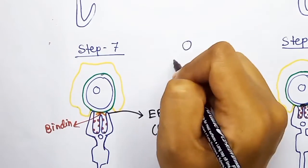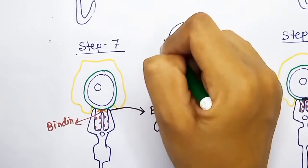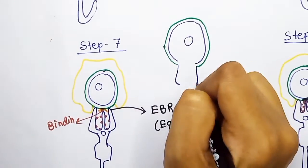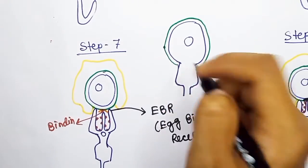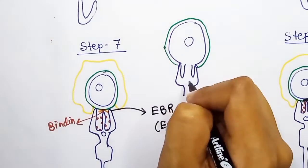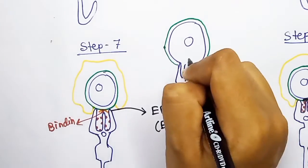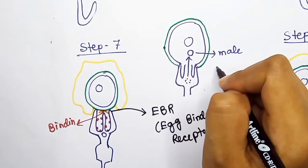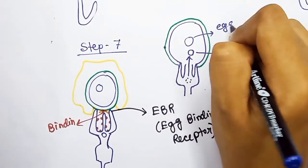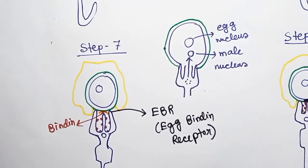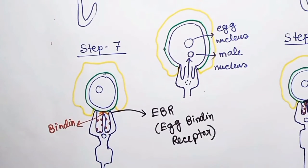So EBR will interact with bindin protein, and this interaction of bindin protein with the vitelline membrane will cause the fusion of the plasma membrane of the egg and the sperm. This will cause the transfer of the male nucleus inside the egg cell. Later, these two nuclei will fuse with each other, and it will make a zygote. The process of fertilization ends here.